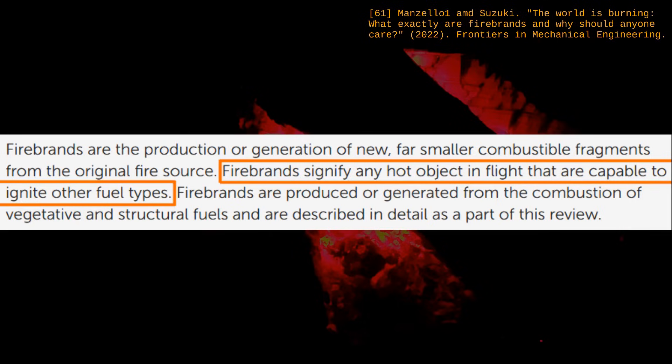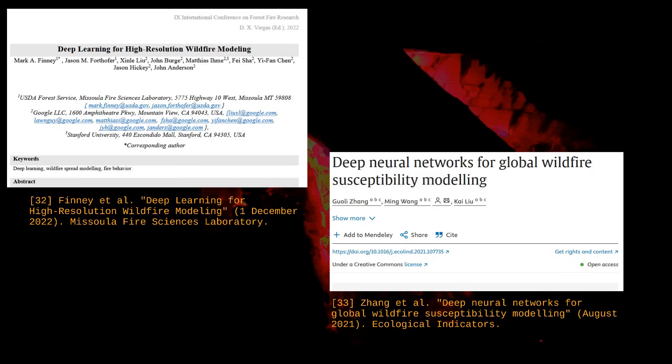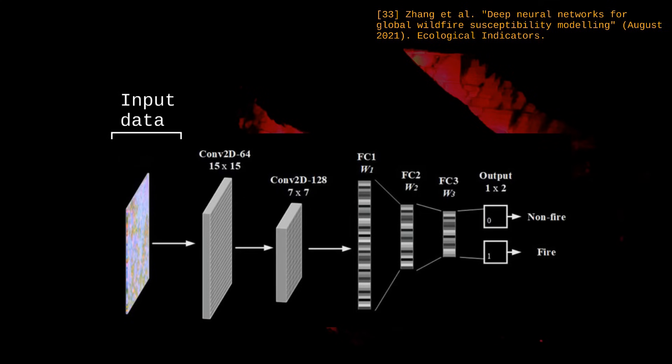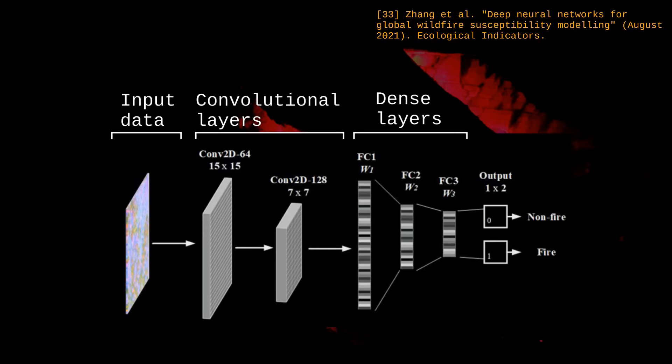And just like the weather, wildfires are chaotic. Pieces of ember can fly off and trigger fires elsewhere. Wind can change direction. Rain can show up. These events affect fires in unpredictable ways. There are some open-source wildfire prediction models. Instead of using global data like GraphCast, they use local ones because they focus on small-scale phenomena. The input data can be a grid whose cells correspond to a particular area with measurements, like whether a fire is occurring or not, soil humidity, or average temperature.